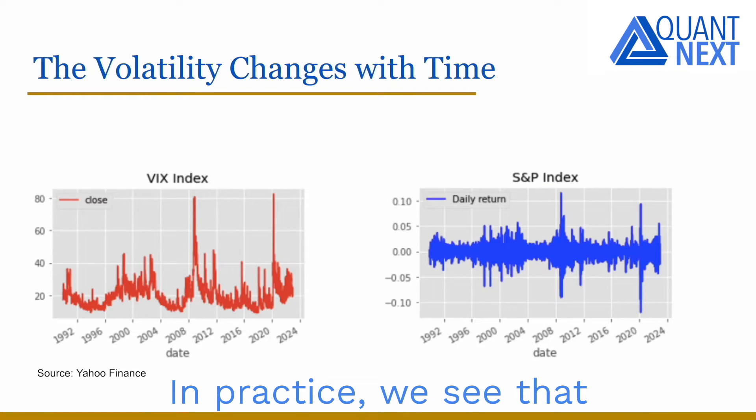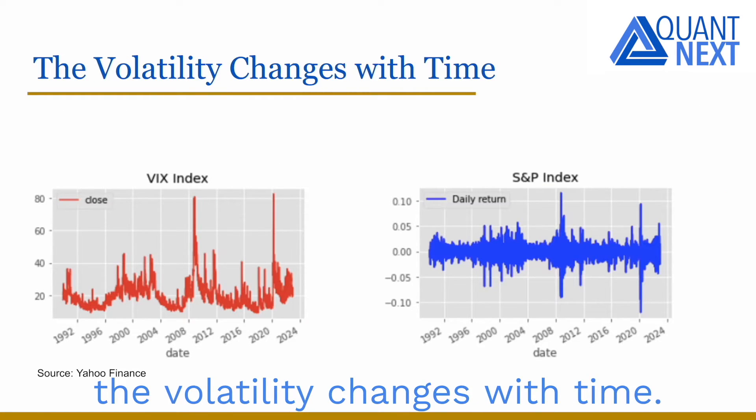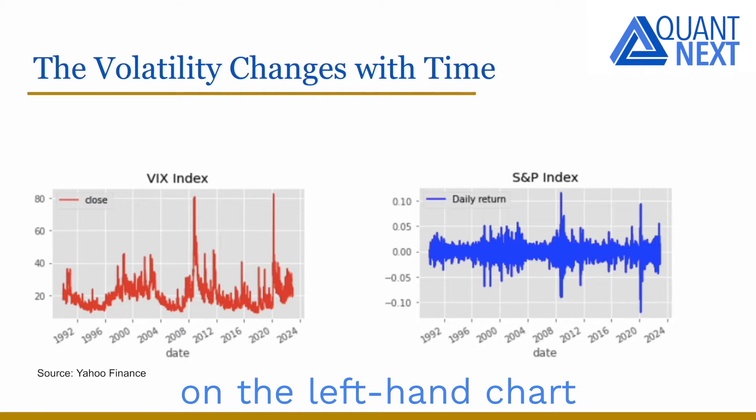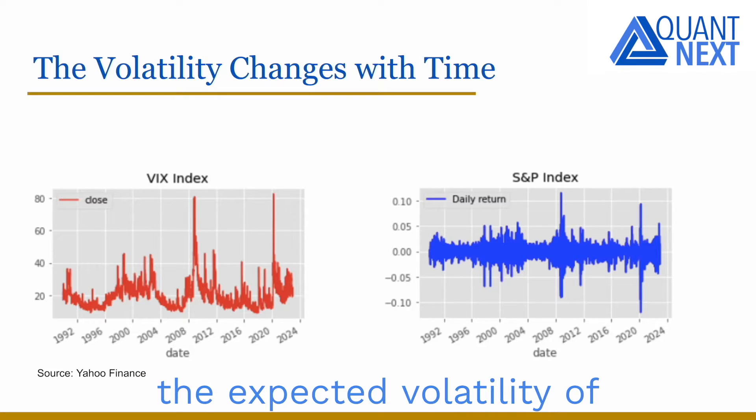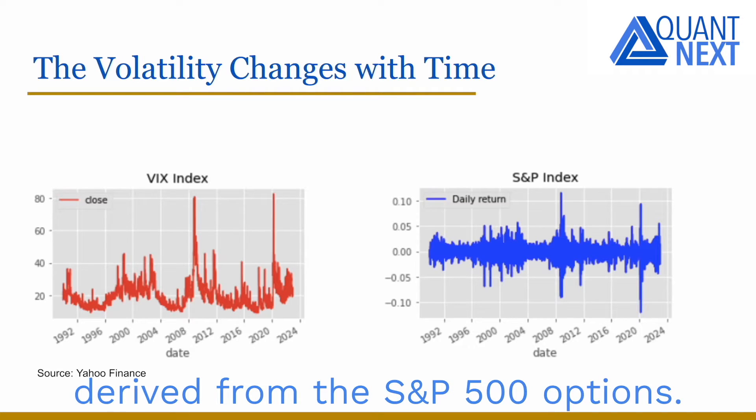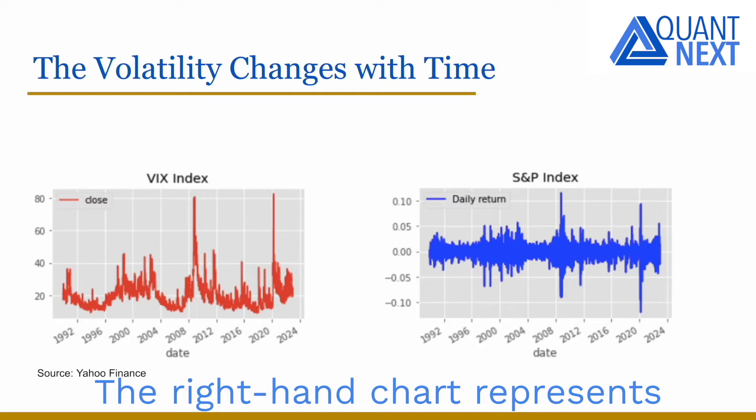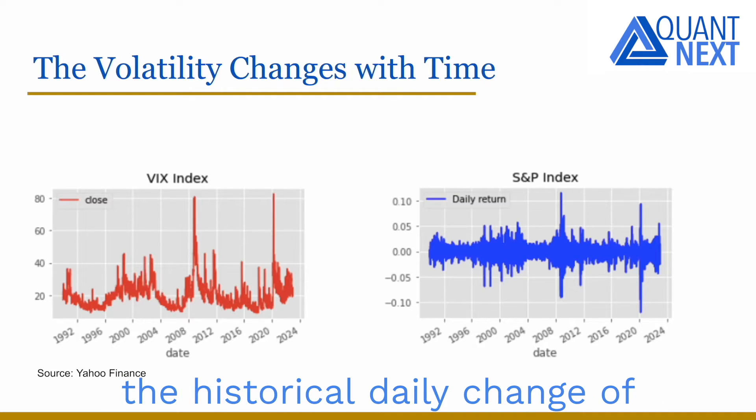In practice, we see that the volatility changes with time. We show on the left-hand chart the historical time series of the volatility index VIX from 1990 to 2022. The VIX index is a measure of the expected volatility of the US stock market over the next 30 days, derived from S&P 500 options. The right-hand chart represents the historical daily change of the S&P over the same period of time.